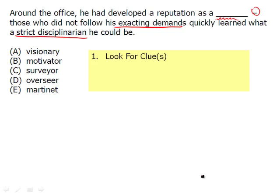So now we have the clues — there are two of them. They more or less mean the same thing: someone is always asking you to do things a certain way and they're very disciplined. You must always do it the right way; they're very strict. So what we can do is come up with our own word, or we also have the option of simply matching these keywords or clues with the answer choices. We know the answer choice has to be a synonym for 'exacting' or 'strict disciplinarian.'